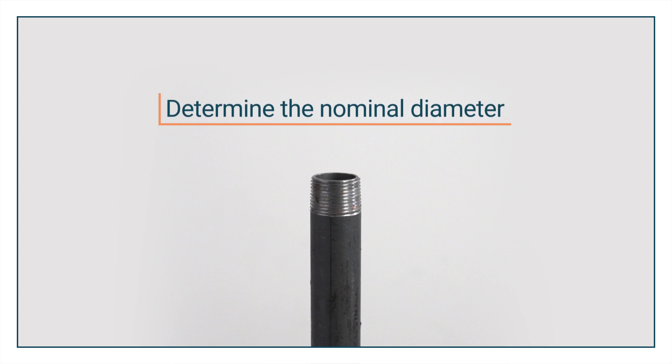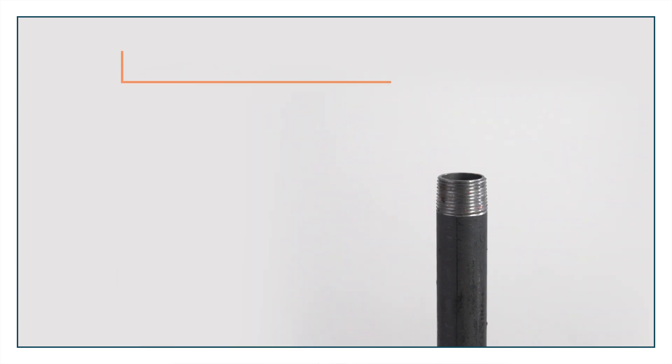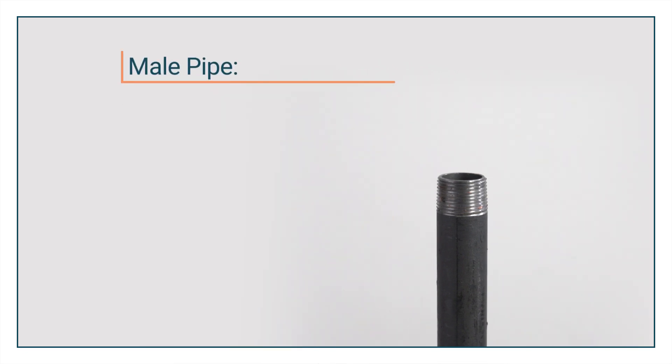First, determine the nominal diameter. For pipes with male threads, you'll need to measure the outside diameter, or OD, of the pipe or pipe fitting.